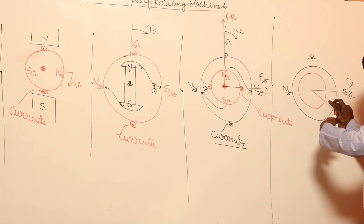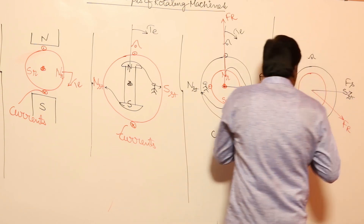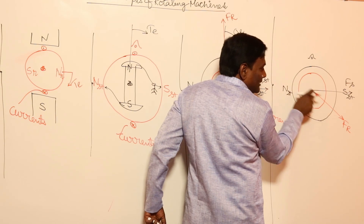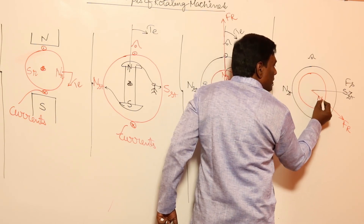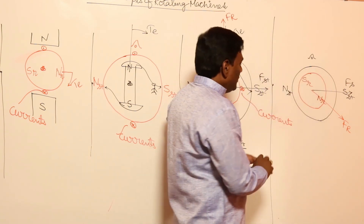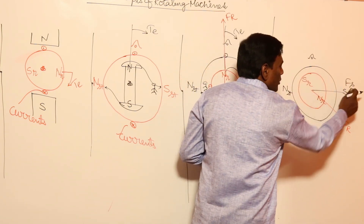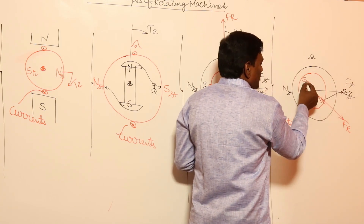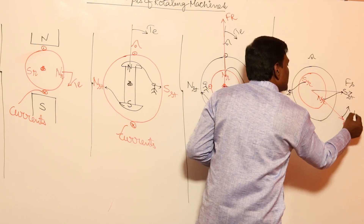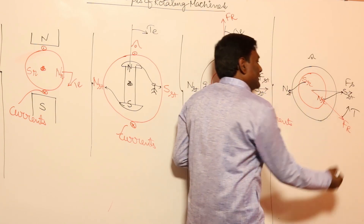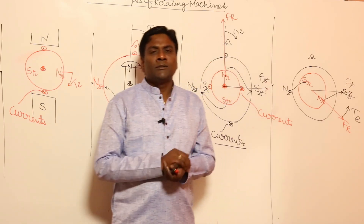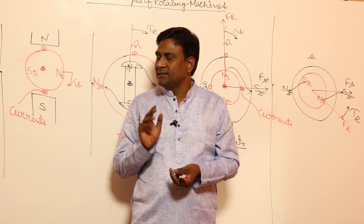Now from the rotor side: flux is coming out of the rotor. If you sit in the air gap and look at the rotor, flux is coming out, so this should be N pole of the rotor and this should be S pole of the rotor. N pole–S pole attraction will happen and S pole–N pole attraction will happen, so torque will be developed in this direction — electromagnetic torque. This is the same question asked for two marks in the old GATE. Though the question is very lengthy, the solution can be very small.